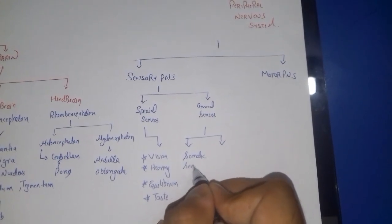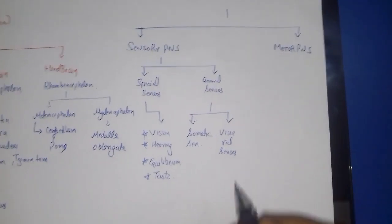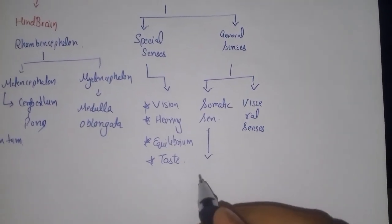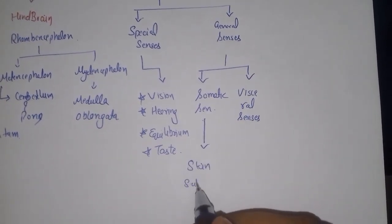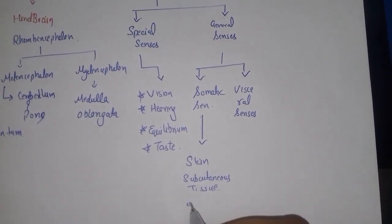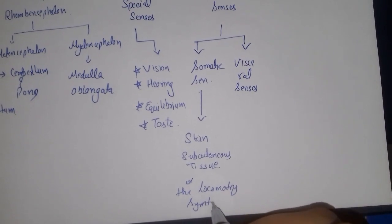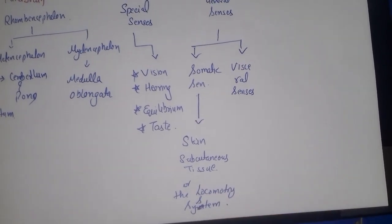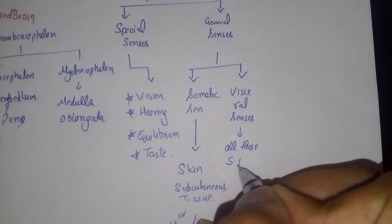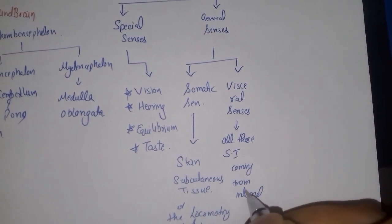The general senses can be further divided into two parts: the somatic senses and the visceral senses. Somatic senses means all those sensory information coming from the skin, subcutaneous tissue, or the locomotory system such as the joint system. Whereas visceral senses means all those sensory information coming from the internal organs.